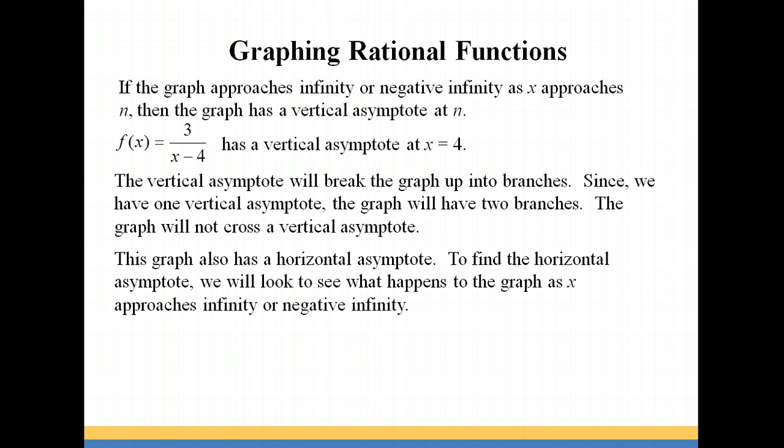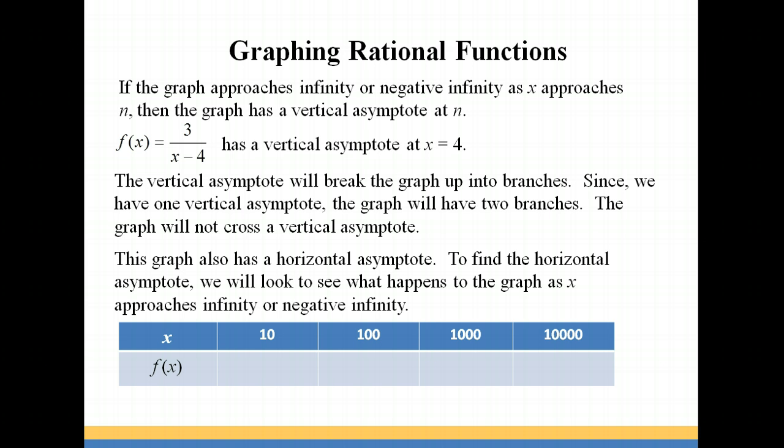This graph also has a horizontal asymptote. In order to find a point at which your graph has a horizontal asymptote, you want to look to see what happens to the function as your x values go to either infinity or to negative infinity. In this case, we're going to look to see what happens to our graph as x approaches positive infinity. So we're going to plug in increasingly larger numbers.